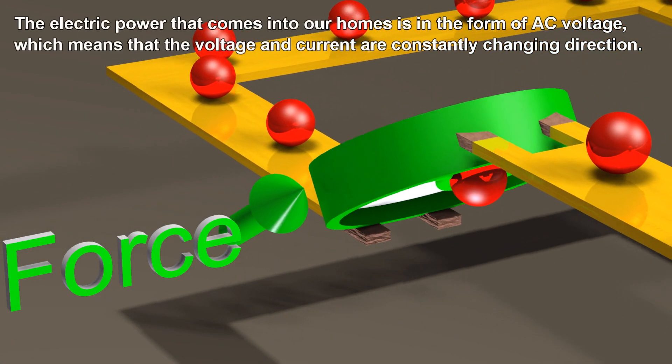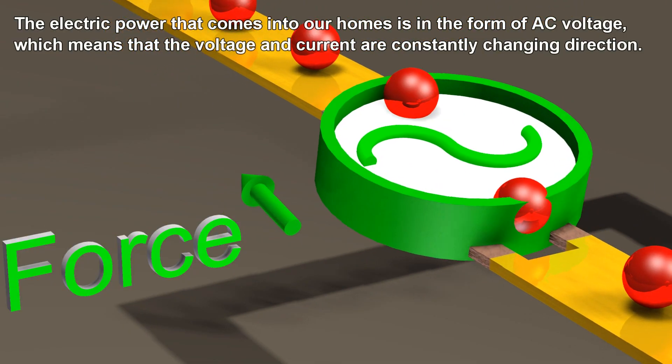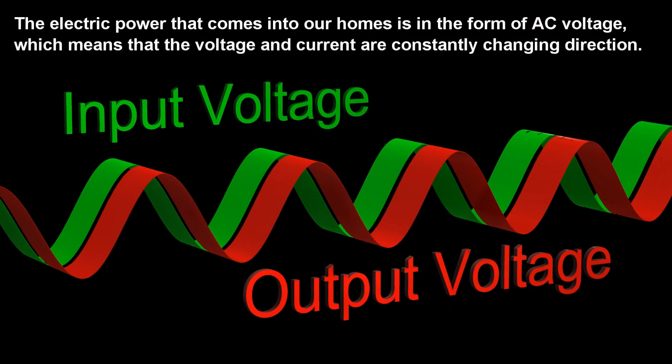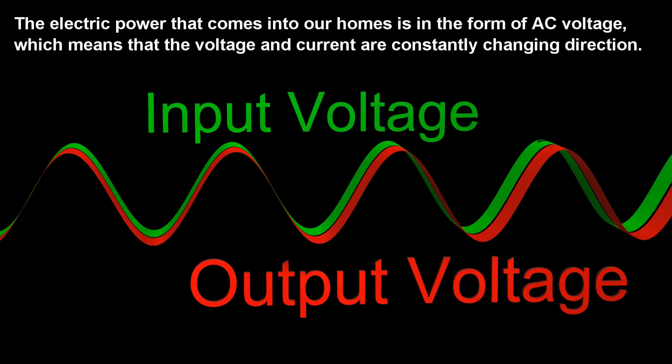The electric power that comes into our homes is in the form of AC voltage, which means that the voltage and current are constantly changing direction.